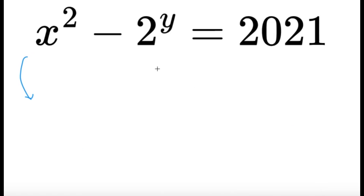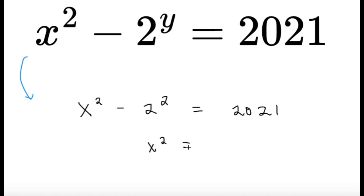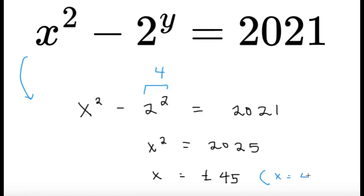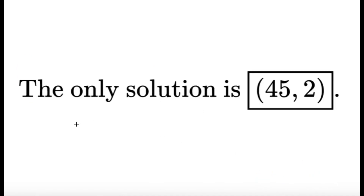Since y equals 2, all we have to do is solve for x. Substituting back: x² − 2 raised to 2 equals 2021, so x² = 2021 + 4 = 2025. Taking the square root of both sides, x equals plus or minus 45. Since we're dealing with positive integers, we take x = 45. Since there is only one value for y and one value for x, the only solution is the ordered pair (45, 2). This is our final answer.